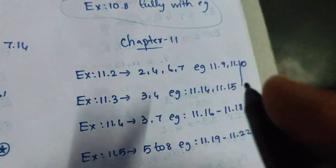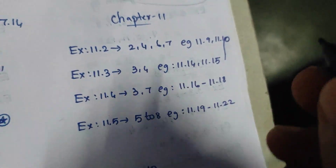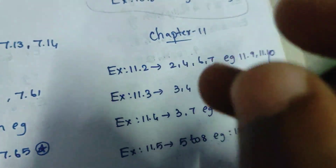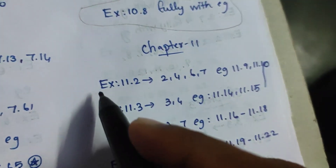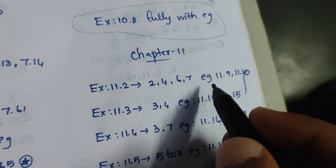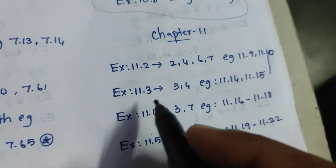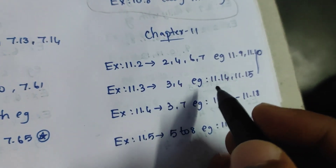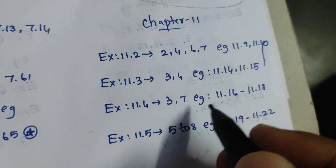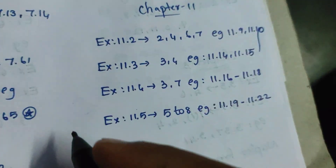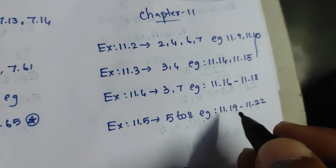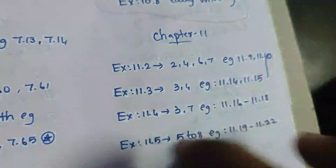It is also the first exam. In chapter 11, the next chapter starts at the 11th chapter. So in this chapter, the 3rd exam. In the exam 1.2 — 2nd, 4 is 6.7. You can click 11.9, 11.10. In the exam 1.3 — 3 and 4. You will add 11.14 and 11.15. In the exam 1.4 — 3 is 7. Example 11.16 and 11.18. Example 11.5, 5.26, Example 11.19, 11.22. This is the 11th chapter.